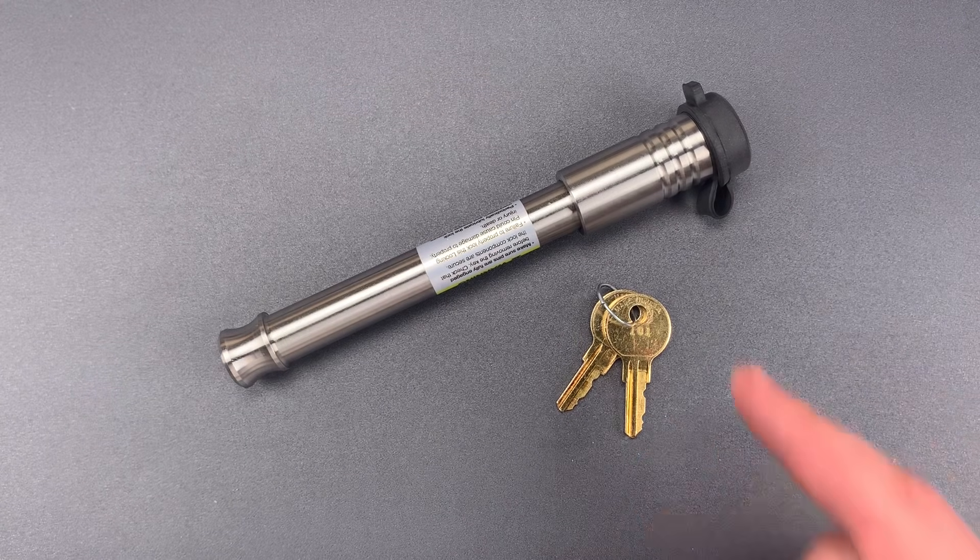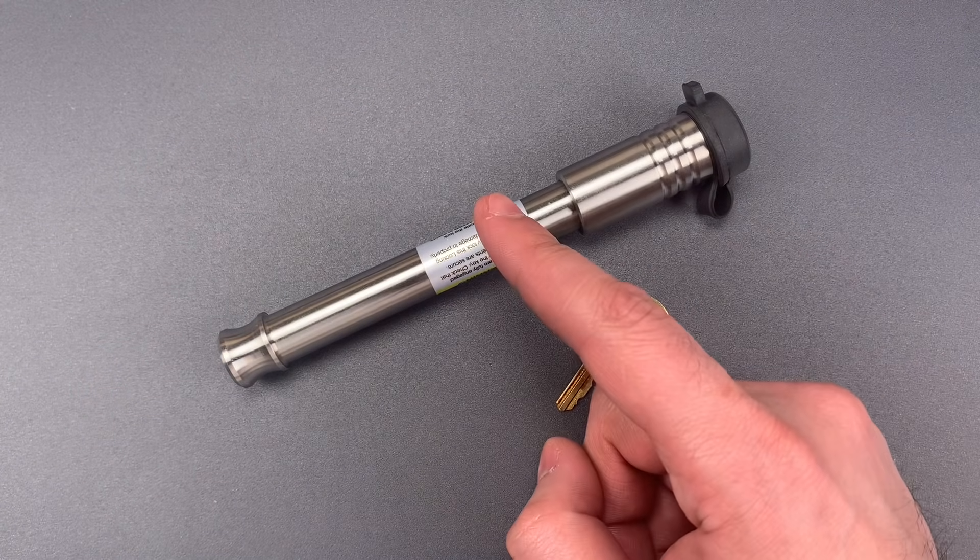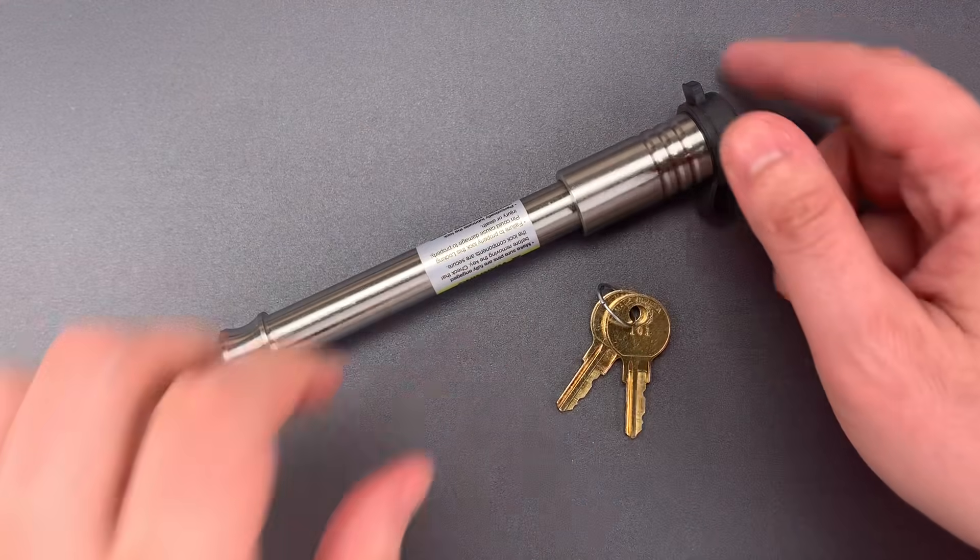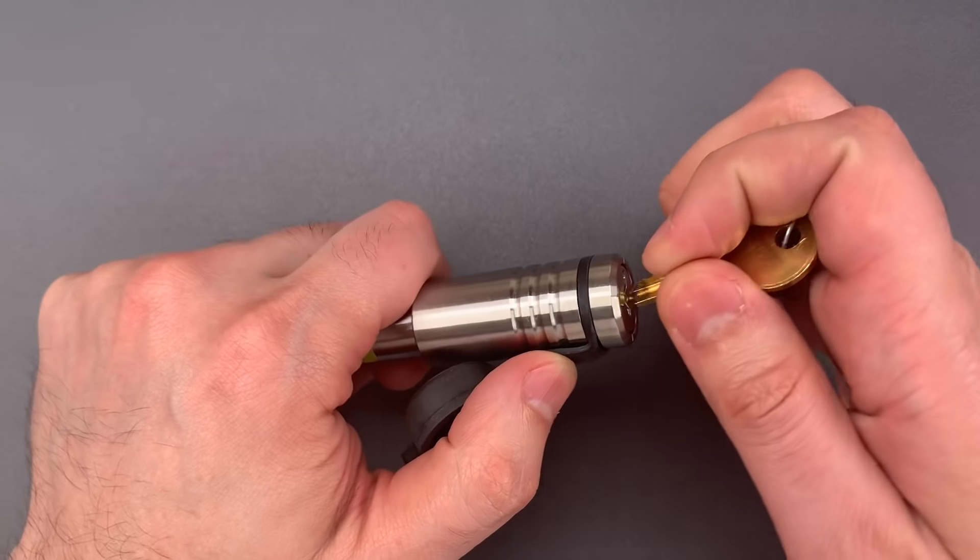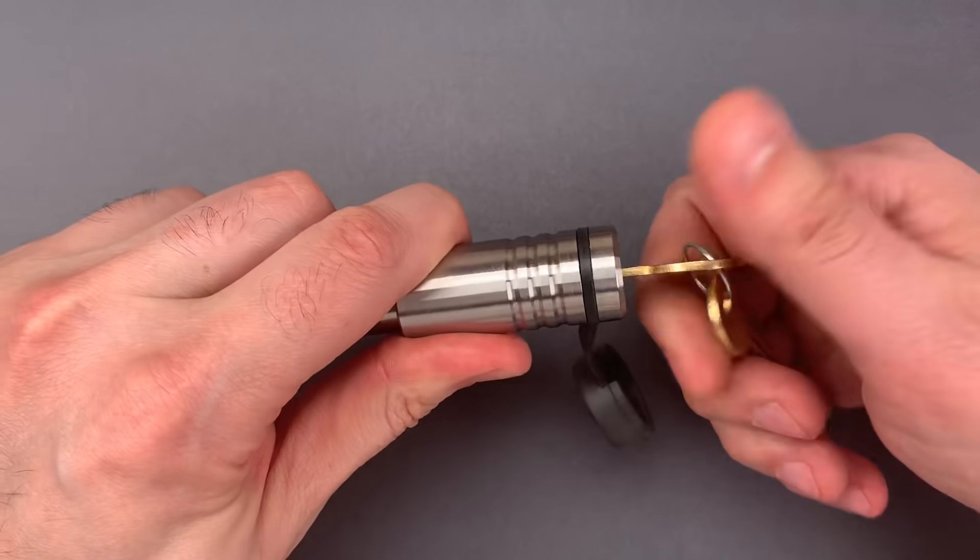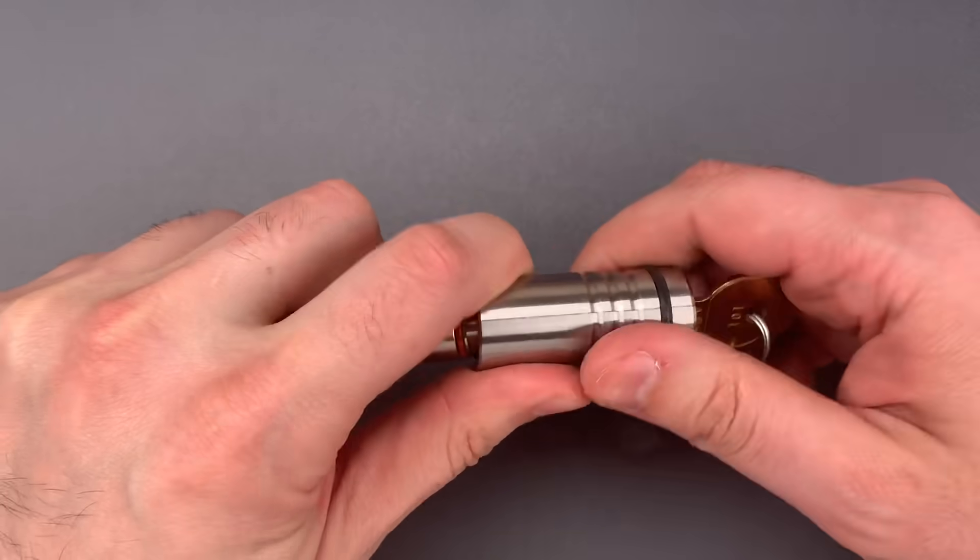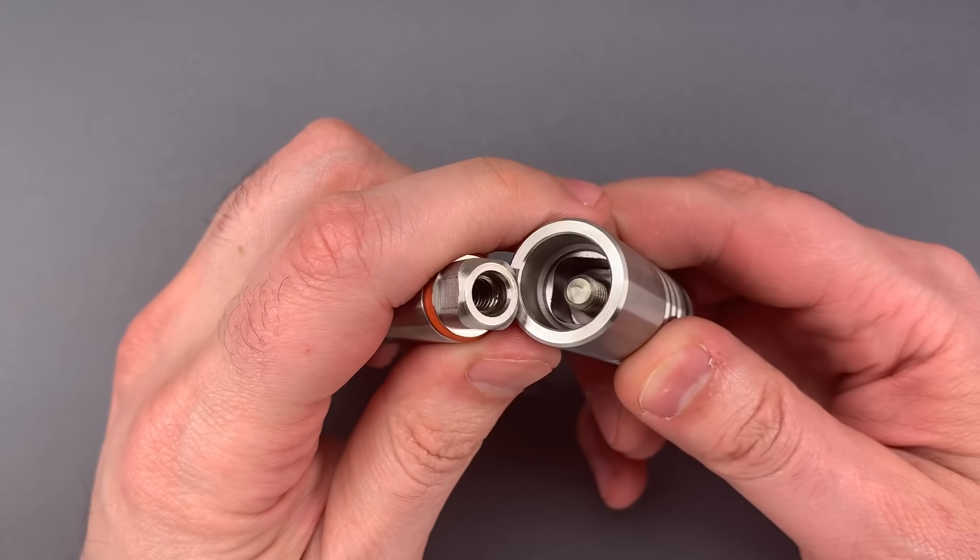Now, the other noteworthy characteristic is the way the lock housing attaches to the bar. On the back of the core is a threaded bolt, and to unscrew it, you turn the key. And you'll note I have to turn the key several times. And we can look inside and see the threads.